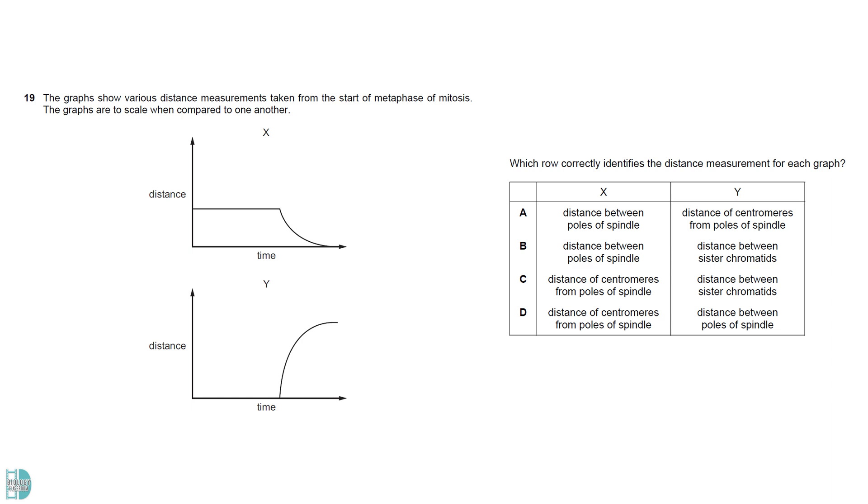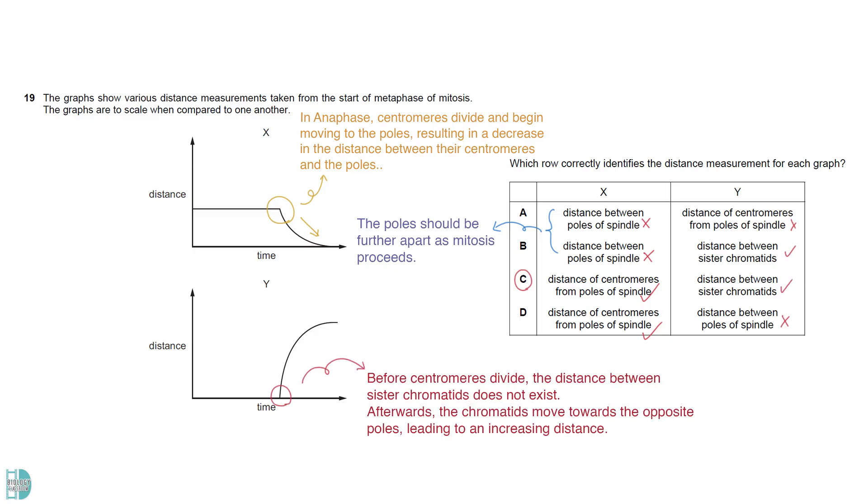X is the distance of the centromeres from the poles of the spindle. In anaphase, centromeres divide and begin moving to the poles, resulting in a decrease in the distance between them. The poles should be further apart as mitosis proceeds. Therefore, A and B are incorrect. Y is the distance between sister chromatids. Before centromeres divide, it does not exist. Afterwards, the chromatids move toward the opposite poles, leading to an increasing distance.